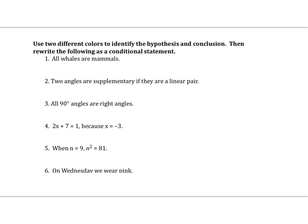Let's practice our understanding of conditional statements by grabbing two different colors to identify the hypothesis and conclusions — it could be a highlighter or a colored pen. Then rewrite the following as conditional statements. The first one is: all whales are mammals. Notice there's no 'if' or 'then' in this statement. The hypothesis is 'all whales' and the conclusion is that they are mammals. So if we rewrite it, we say: if an animal is a whale, then it is a mammal.